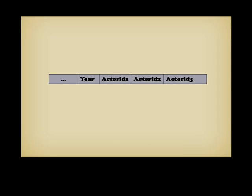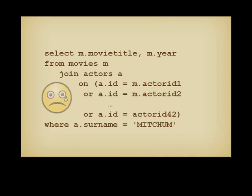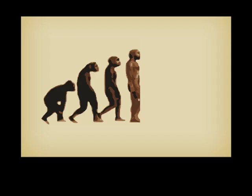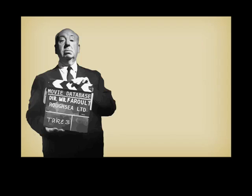How many actors should we record? The three leading actors? What about a star-studded movie such as The Longest Day? What if one day we decide to enrich the database and record more actors, and perhaps the full cast? If we want to add more actor identifiers to the table, we shall have to review all existing queries to add OR conditions. Storing director and actor identifiers inside the movies table will make the evolution of the application very painful. This isn't therefore a good design, and we must try harder.